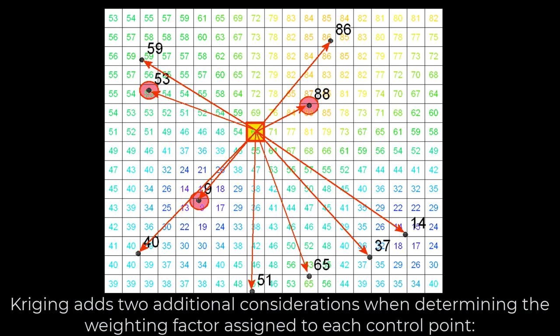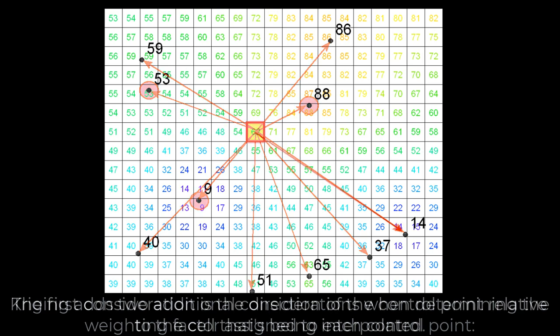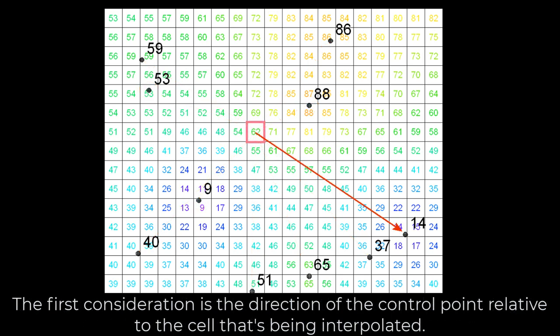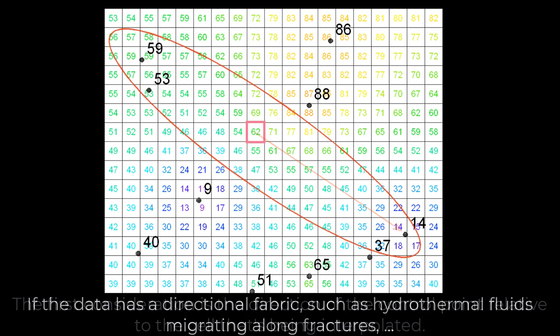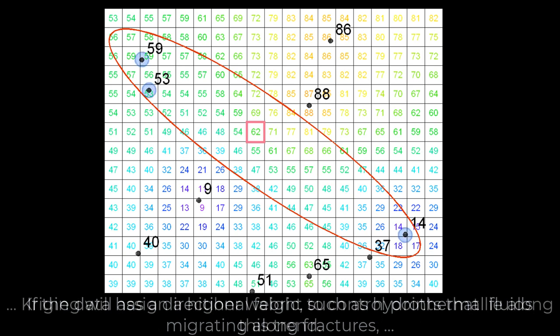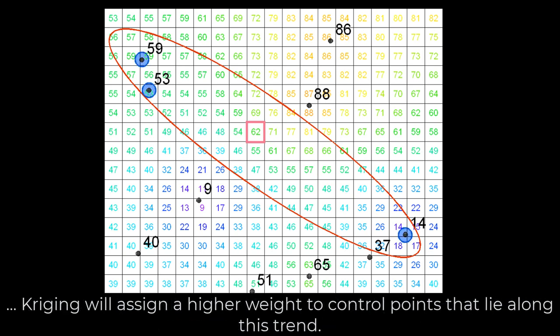Kriging adds two additional considerations when determining the weighting factor assigned to each control point. The first consideration is the direction of the control point relative to the cell that's being interpolated. If the data has a directional fabric, such as hydrothermal fluids migrating along fractures, Kriging will assign a higher weight to control points that lie along this trend.